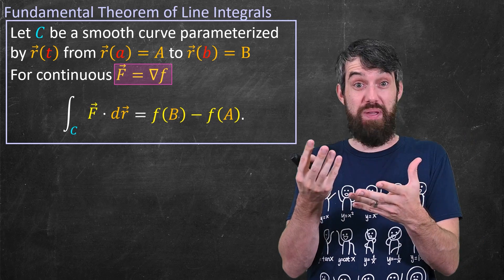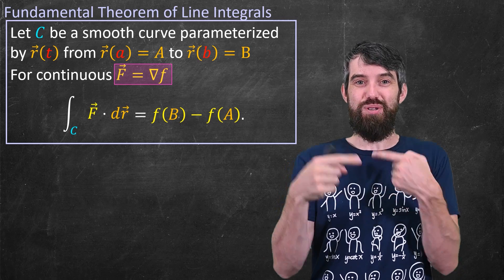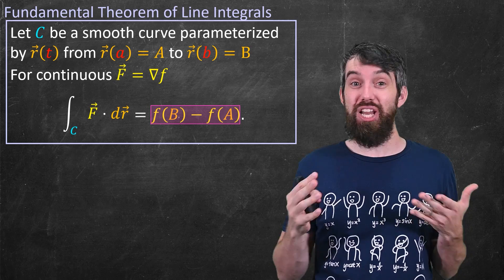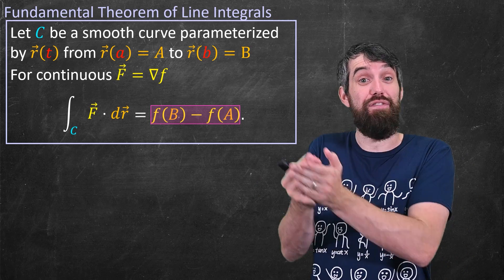So nevertheless I have my field being not any field but the specific case where it can be written as the gradient of f. And then the result that I get is that the line integral is much like the fundamental theorem of calculus, it's just the difference of the function f(B) minus f(A).